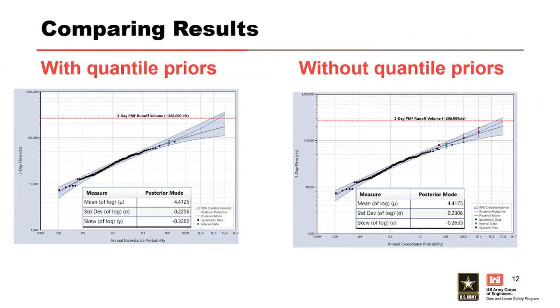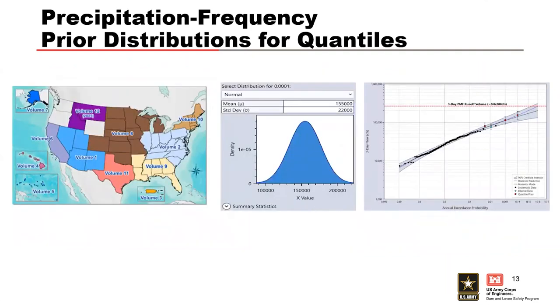Once the Bayesian analysis is complete, we can compare the results with or without the quantile priors. In this example, we see that including the quantile prior distribution results in a small reduction in the estimated skew. This will cause the posterior mode curve to shift slightly to the right. The uncertainty is also reduced, which can be observed in the reduction of the widths of the credible intervals. The reduction in the uncertainty also moves the posterior predictive curve closer to the posterior mode curve. And we can observe this by looking at the annual exceedance probability estimates for the probable maximum flood. This frequency shifts at that point, is shifting the order of magnitude about a half in order to the right.